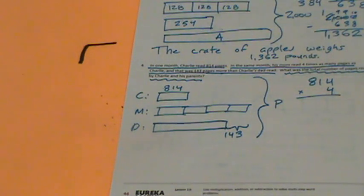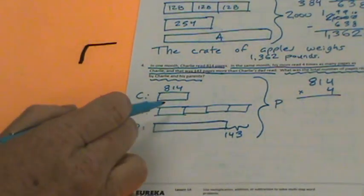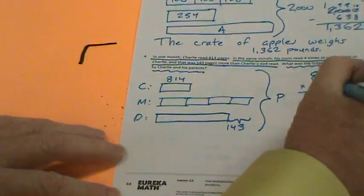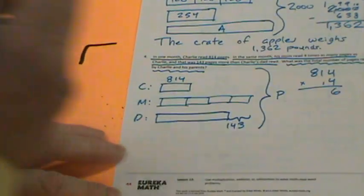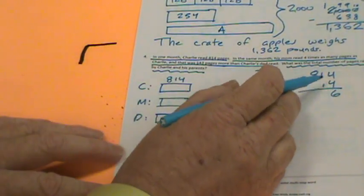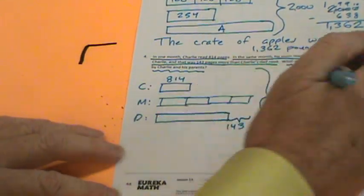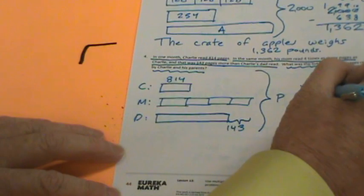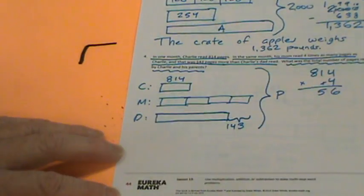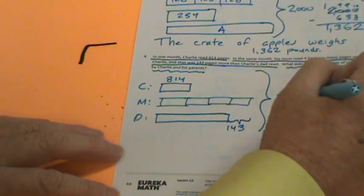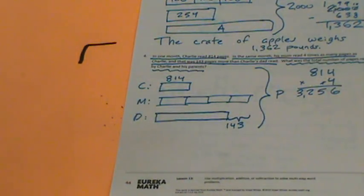That's what we've got to figure out for Mom — she read four times as much as Charlie. Four times four ones is 16. One times 40 plus that one is 50, so four times one is four plus one is five. And eight times four is 32. So there we have it: 3,256. That's what Mom read.